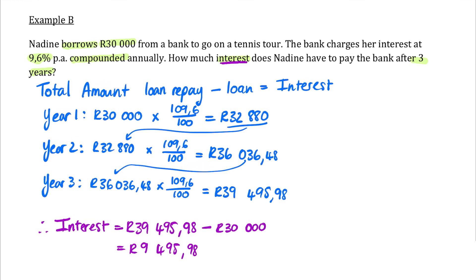I hope you now have a feeling for how very different compound interest works. If we're investing, it works for us — we earn interest on our interest. But if we're borrowing, it works against us: the longer we keep the money, the more interest we're charged each year. Now go and do Exercise 5. It looks short but these calculations are quite long because you need to show what happens every single year. Good luck.